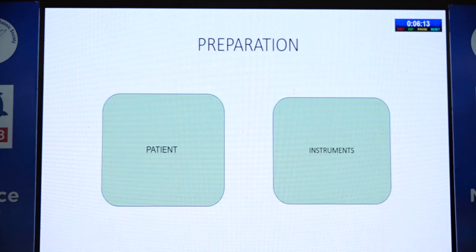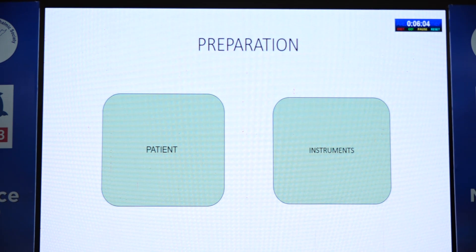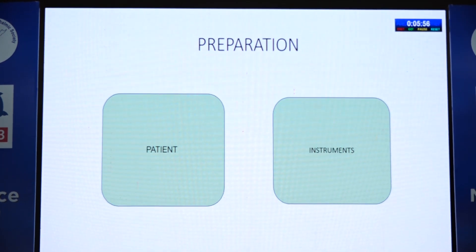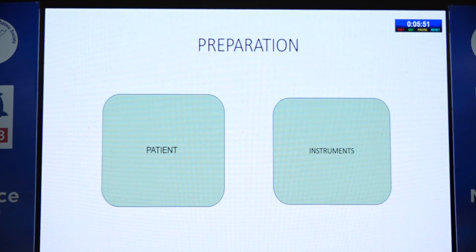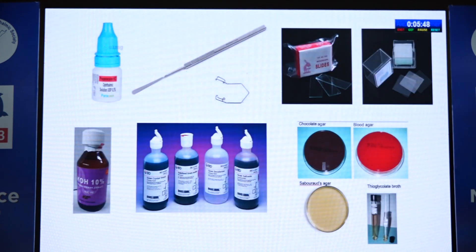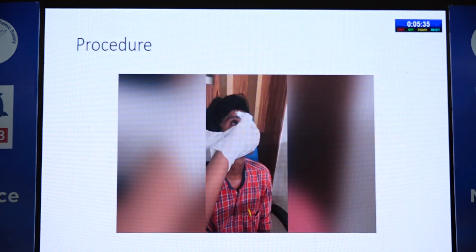Why do we need to do a corneal scraping? There are many kinds of pathogens that cause corneal infections, so clinical manifestations are complex and diverse. Early, rapid, effective diagnosis is needed — and scraping achieves this. Apart from diagnosis, it decreases the organism load and helps in better drug penetration. Before going to the procedure, it is always better to document the case with slit lamp images and drawings, and counsel the patient to avoid unnecessary anxiety.